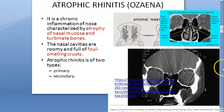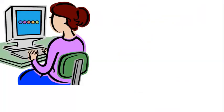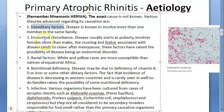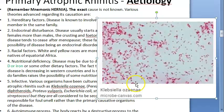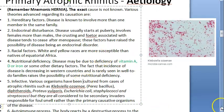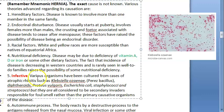For primary atrophic rhinitis, the etiology includes hereditary factors, endocrinal disturbances, racial factors, and nutritional deficiency — such as deficiency of vitamin A, vitamin D, and iron. Infective causes include Klebsiella ozena, Proteus vulgaris, E. coli, Staphylococcus, and Streptococcus, all of which can lead to infection and trigger this condition.